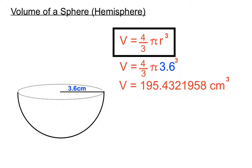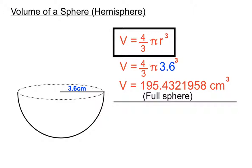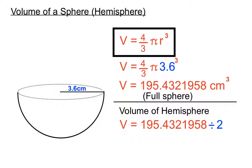We're going to put 3.6 in instead of the r and let our calculator do the work. It's a good habit to keep track of lots of decimal places, because if you use that full version for later calculations it's best to be accurate and account for all the decimal places. That's the full sphere answer, but we don't have a full sphere — we have half a sphere. So the volume of our hemisphere is that full sphere value divided by two, giving us 97.72 centimeters cubed.